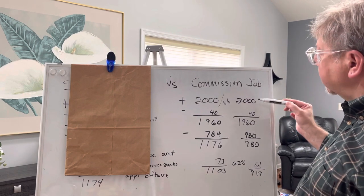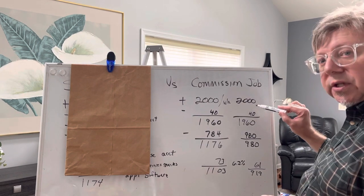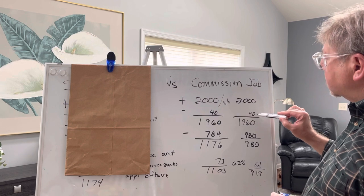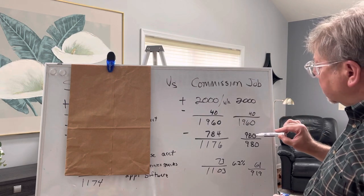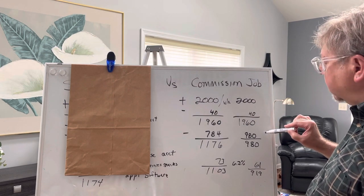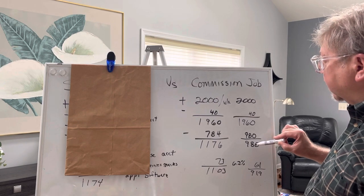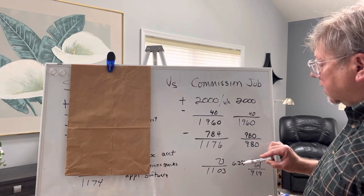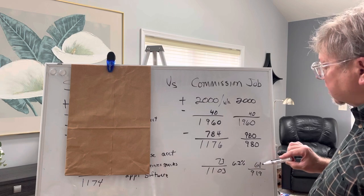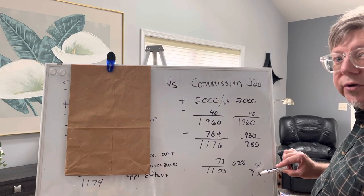If you work in a salon that pays 50% commission, you bring in the $2,000 per week. Product deduction, $980 goes to the salon. $980 is your gross pay. We deduct the social security tax, $61. You're left with $919.